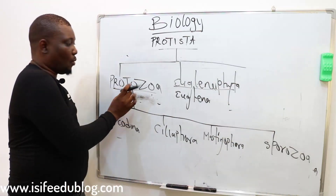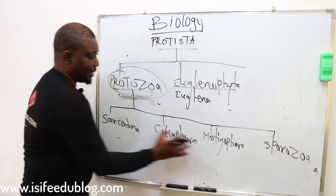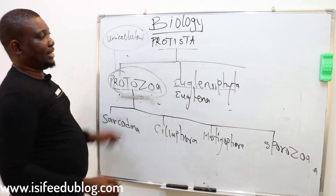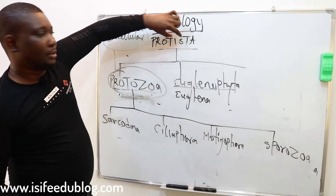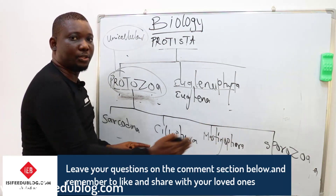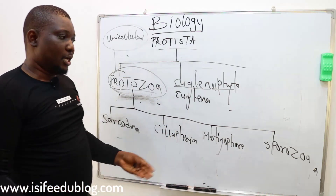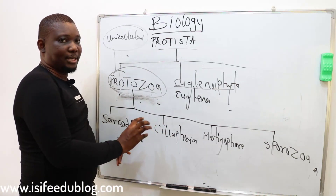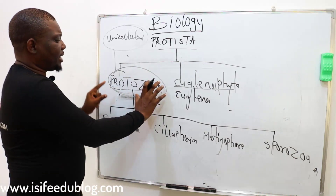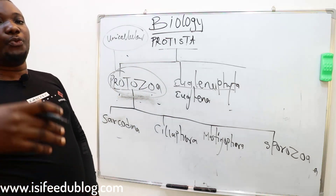One thing you must know about protozoa is that all of these classes are also unicellular — this is why they are under Protista. Their mode of reproduction is basically asexual, through binary fission, even though some classes reproduce sexually. Most classes of protozoa use different means of movement or locomotion.